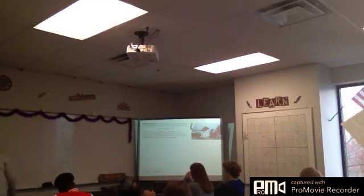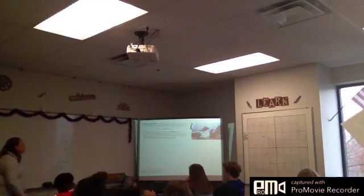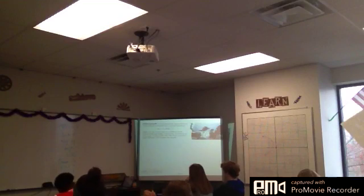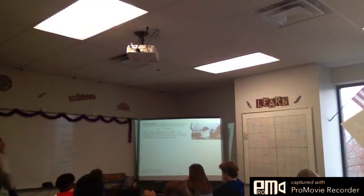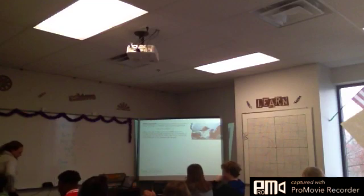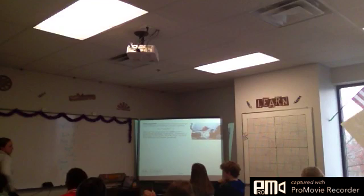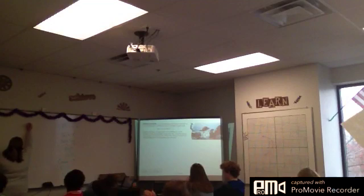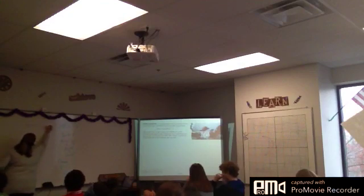Word problem. In a hurricane, the mean sustained wind velocity v in meters per second is given by the formula: V(p) equals 6.3 times the radical of 1013 minus p, where p is the air pressure in millibars at the center of the hurricane. Estimate the air pressure at the center of the hurricane when the mean sustained wind velocity is 54.5 meters per second. So I'm going to say 54.5 equals 6.3 times the square root of 1013 minus p.